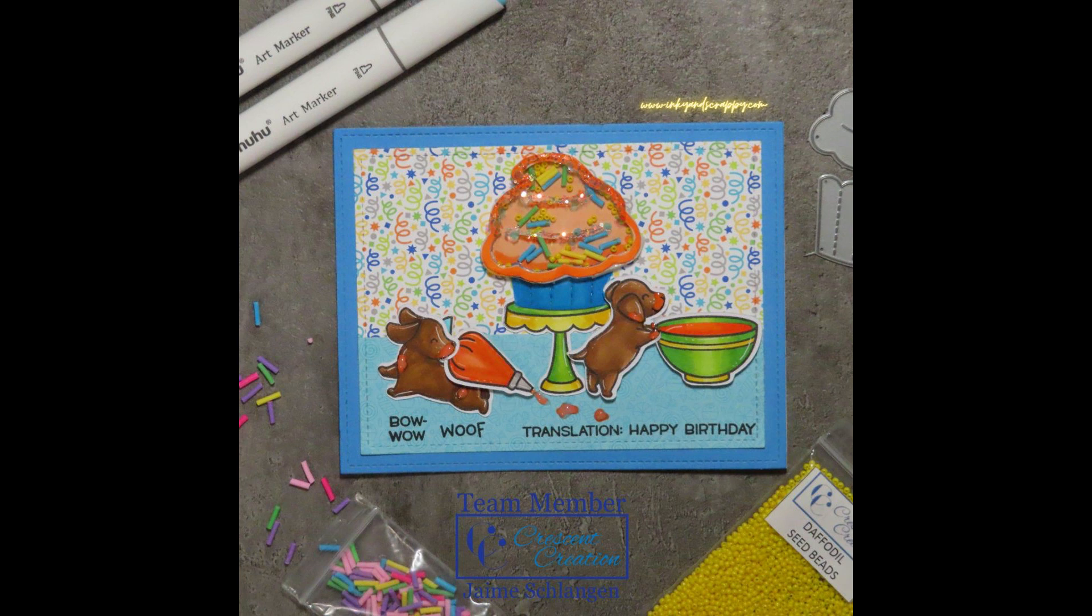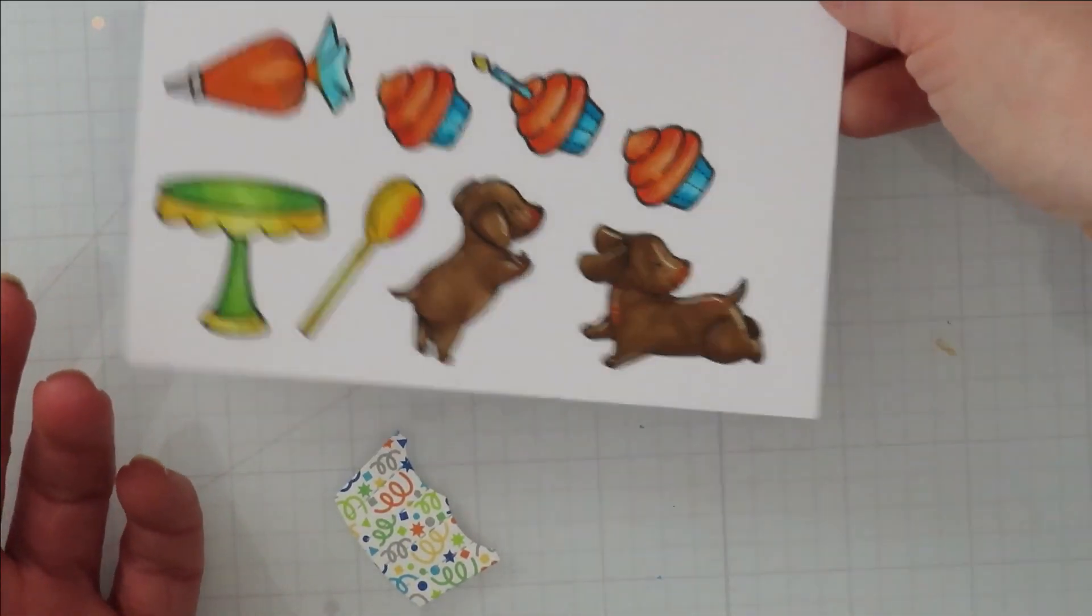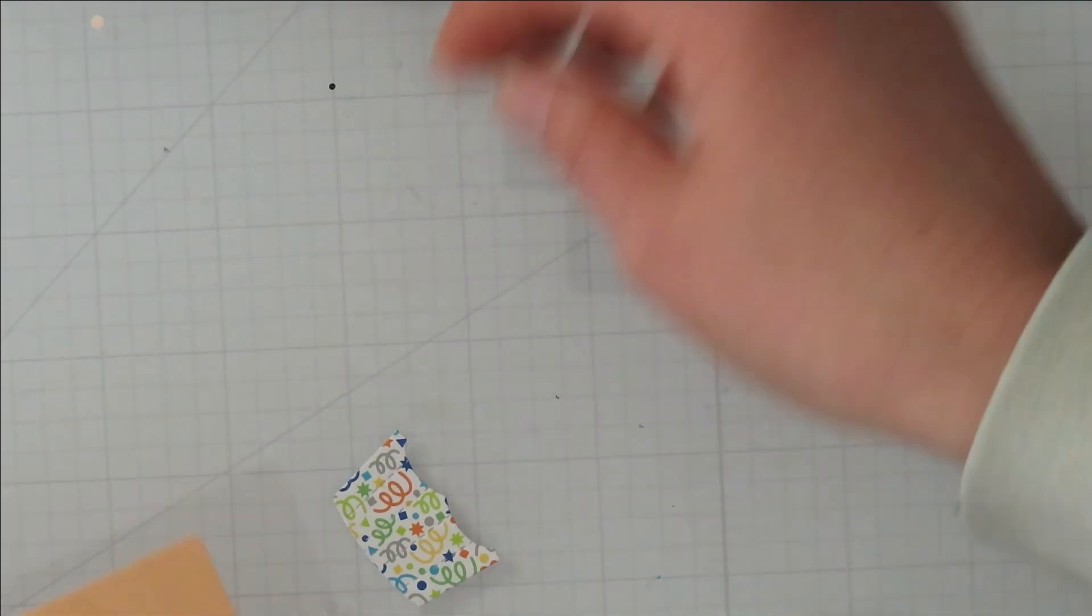Hello, Jamie from Inky and Scrappy joining you today on the Crescent Creations YouTube channel with a fun shaker card. I'm altering and adding to one of my already favorite Lawn Fawn Build-A-Sets, the cupcake set.